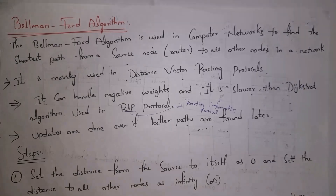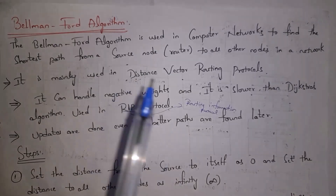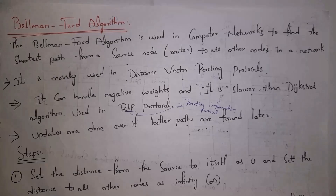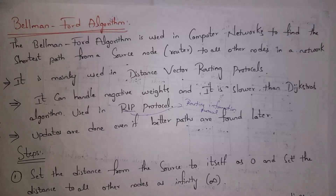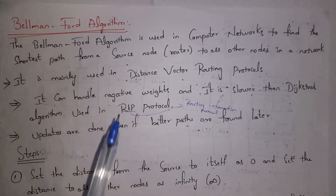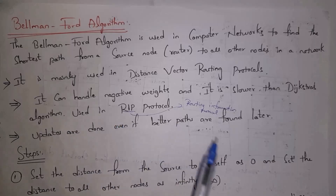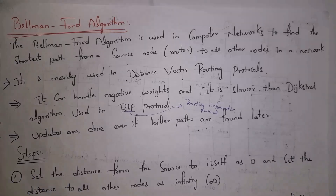Bellman-Ford algorithm is also used to find the shortest path from a source node to all other nodes in a network. This algorithm is mainly used in distance vector routing protocols. Dijkstra's algorithm cannot handle negative edges, but Bellman-Ford algorithm can handle negative edges. However, compared to Dijkstra's algorithm, Bellman-Ford algorithm is slow. This algorithm is based on RIP protocol, where RIP stands for Routing Information Protocol.